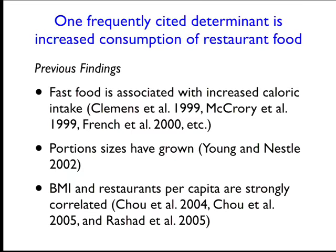These papers did find a positive relationship between restaurants per capita and BMI, but a lot of that relationship is actually just identified off time trends. BMI is trending upward over time, and the number of restaurants per capita is also trending upward — probably a reflection of society getting richer so people can afford to eat out more often. If you regress one time series on the other, you find a significant relationship that clearly has no causal interpretation.